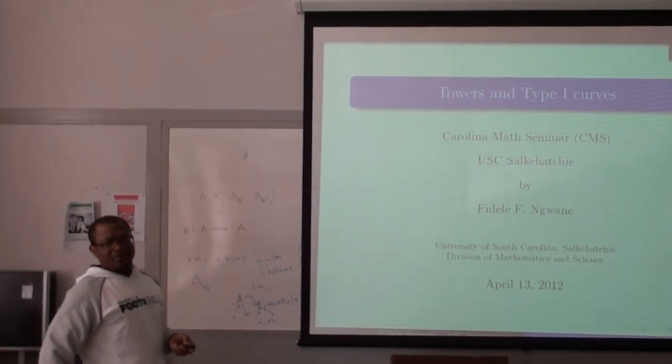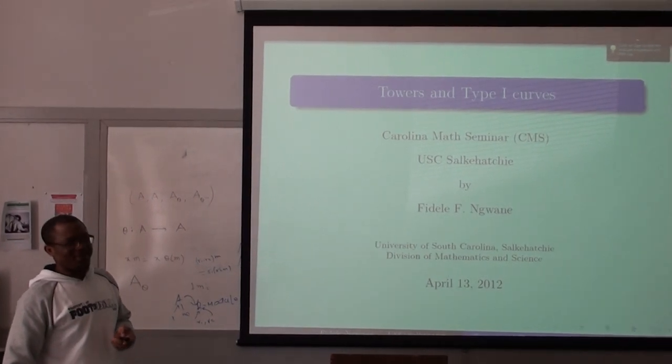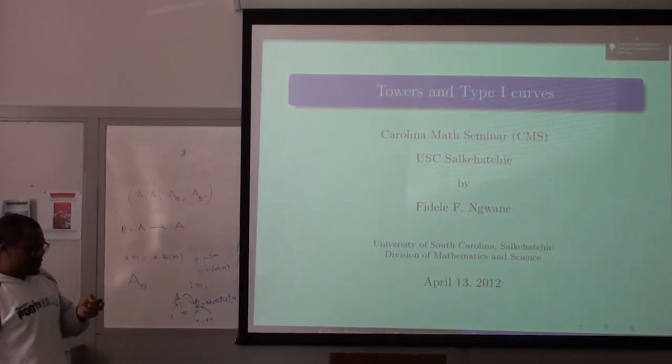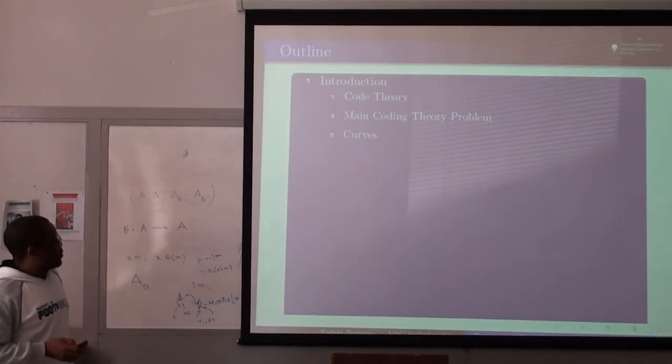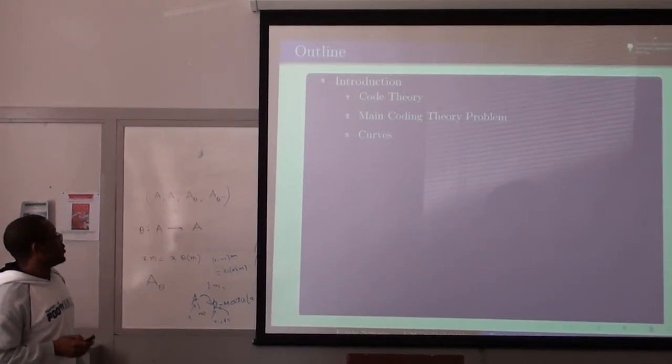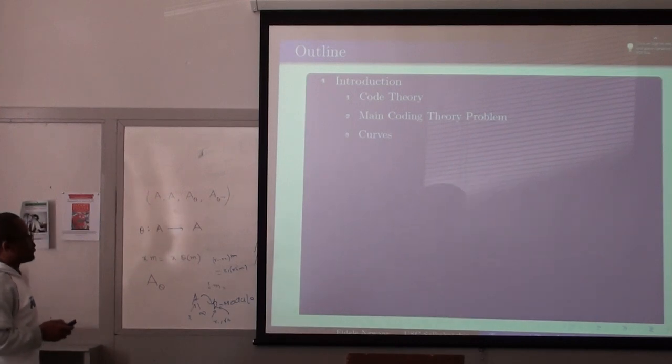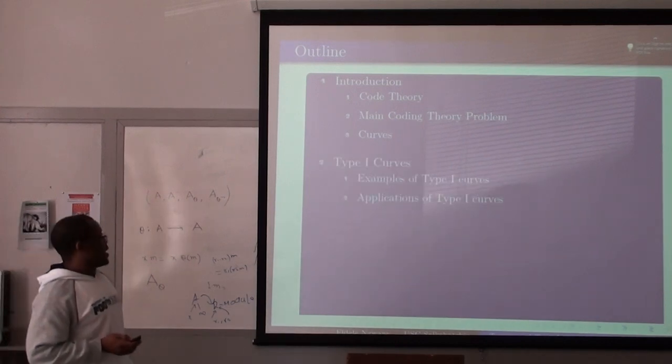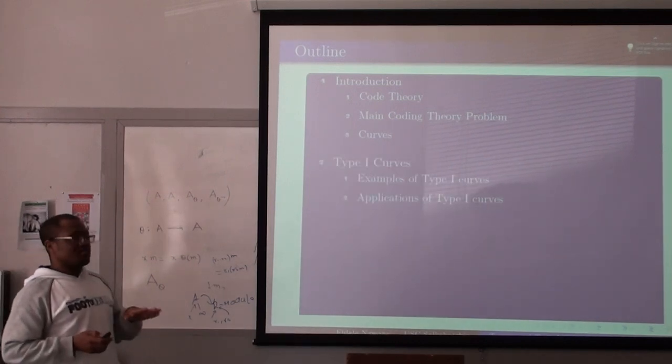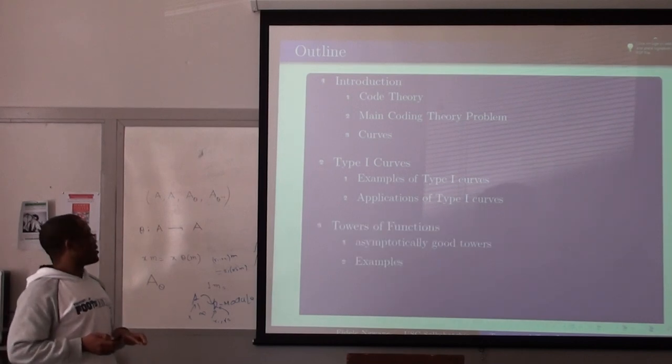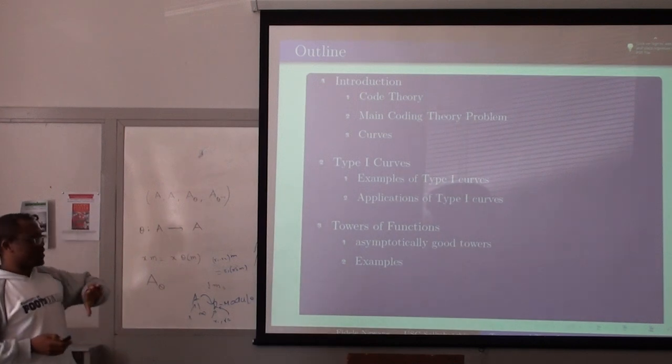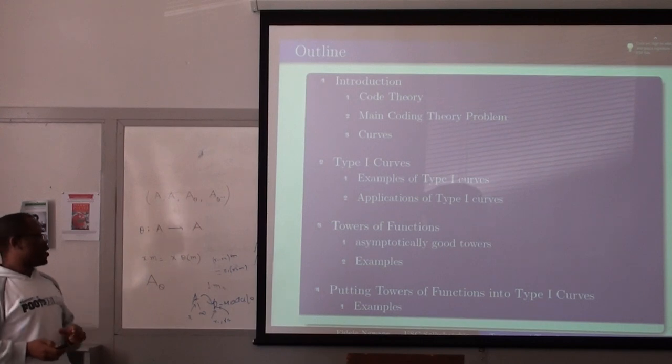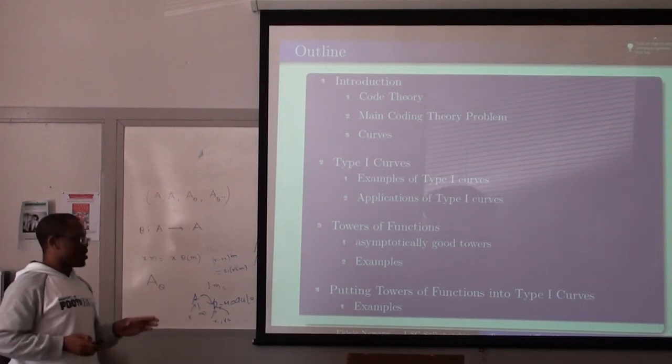Thank you all for waiting. This is the last one. I hope I will be fast. First of all, I will give you a brief introduction, talk a little bit about code theory, the main code theory problem curves, and then I will talk about Type 1 Curves. I'll show you some examples and applications. Then we will look at Towers and see what we mean by a tower. We will look at some examples, and finally, we will see how we can put Towers into Type 1 Curves.